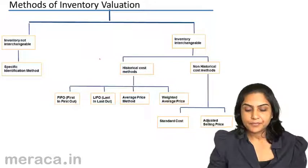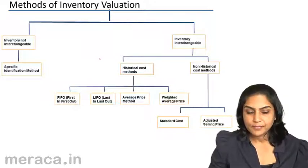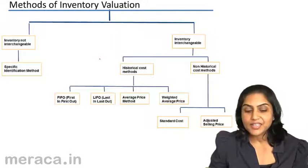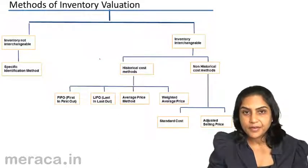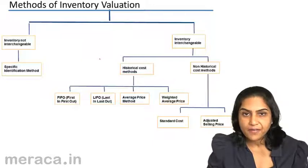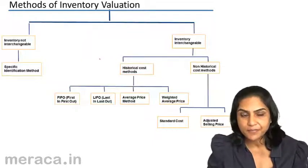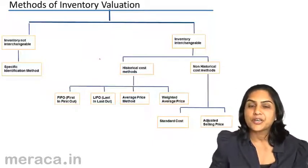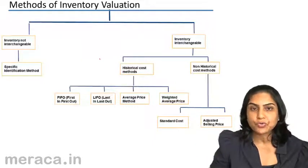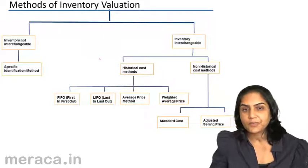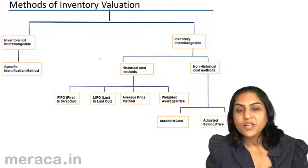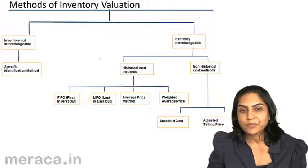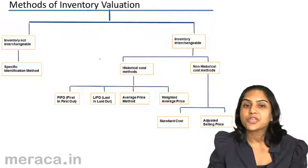Inventory is purchased in many batches, in several lots. Today we may purchase a batch at Rs. 100. A week later we may purchase it at Rs. 105, and a week after that at Rs. 107. The question arises that whenever we issue these materials to production or we sell these items, what is the cost of these issues?